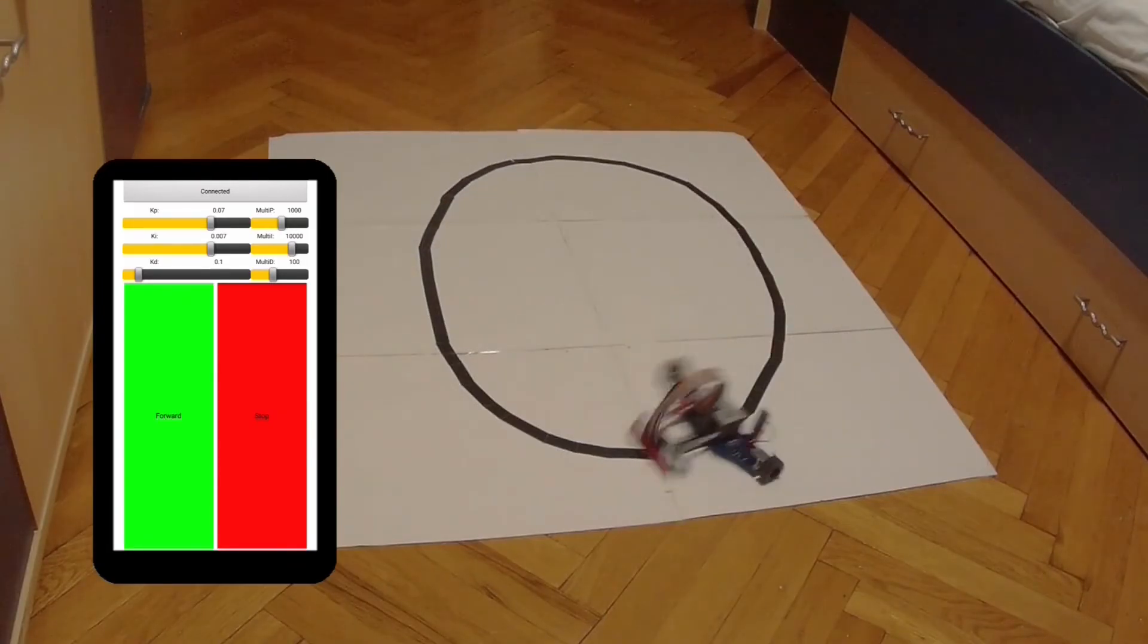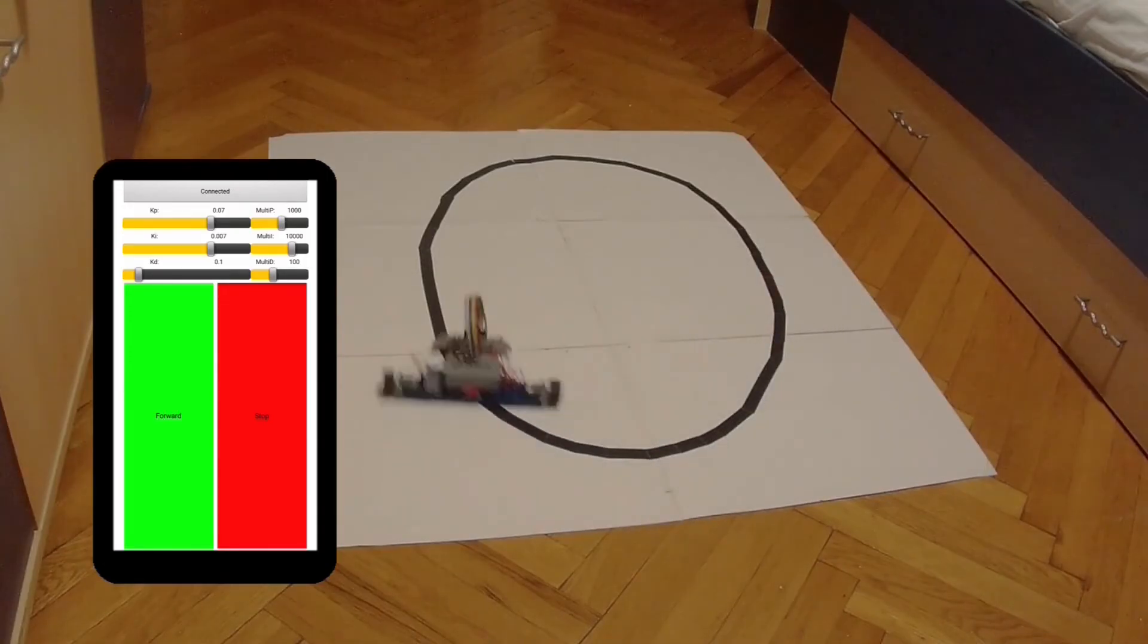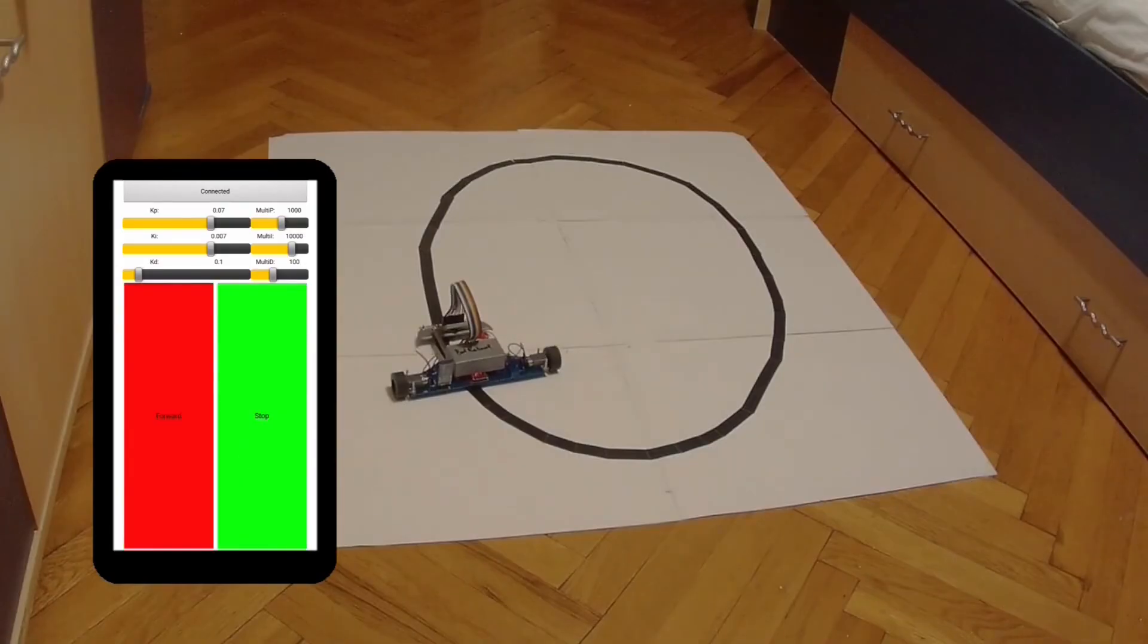When the derivative gain is lesser than the desired value, it will not effectively correct the error, resulting in oscillations and getting the robot off the track when taking narrow curves.